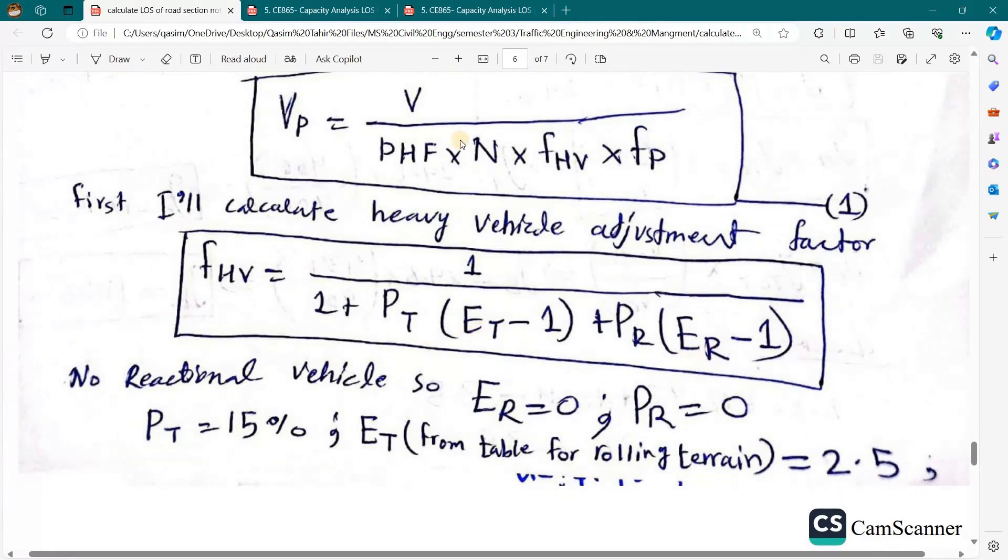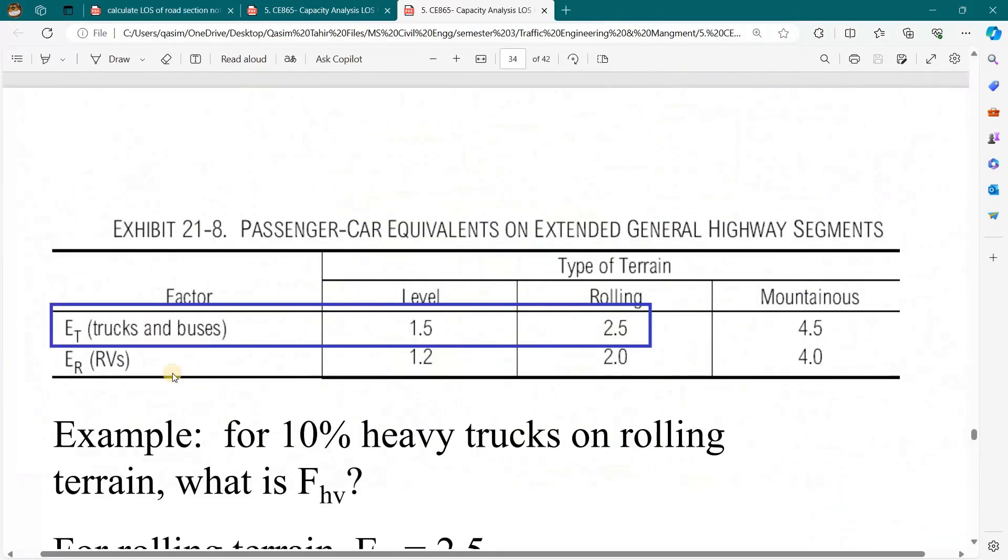ER and ET for rolling terrain. Here we have the table for rolling terrain. We have ET value of 2.5 and ER is equal to 2.